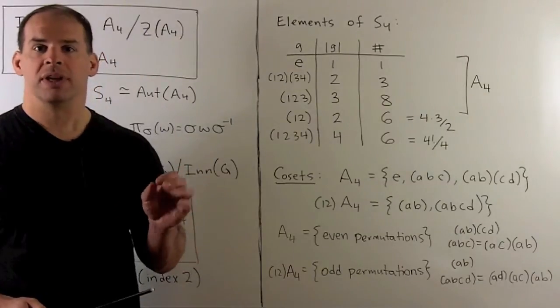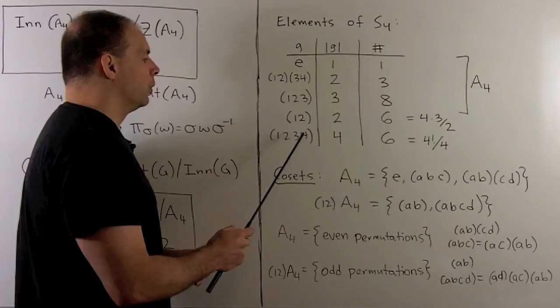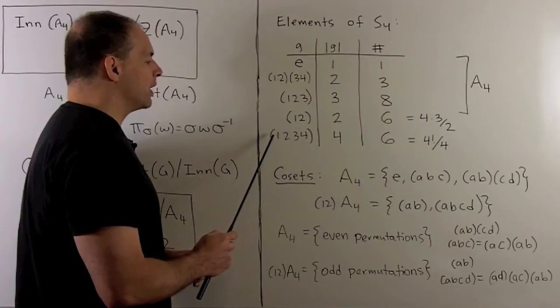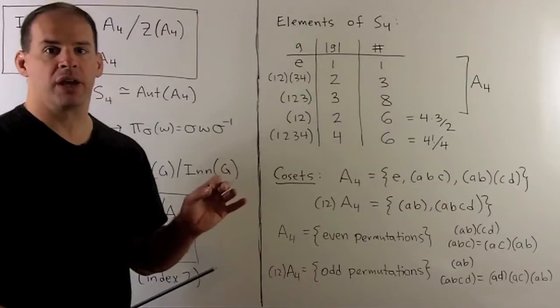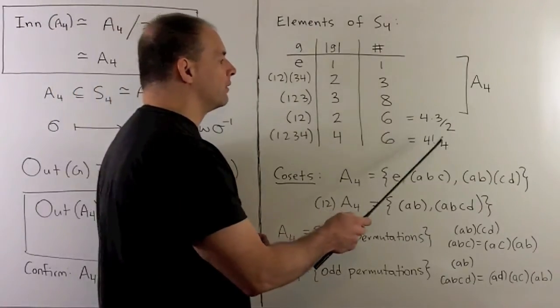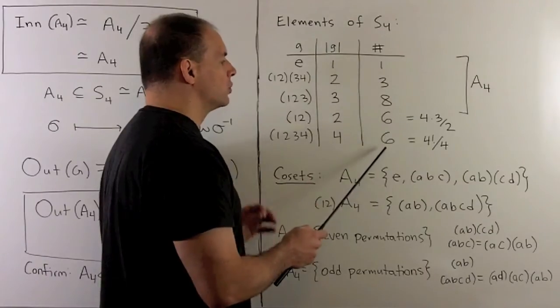For the four cycles, same idea. I have four, three, two, one. Note if I shift, there are four shifts that I can do that give me the same four cycle. So four factorial divided by four is six. Then you'll note this adds up to 24.